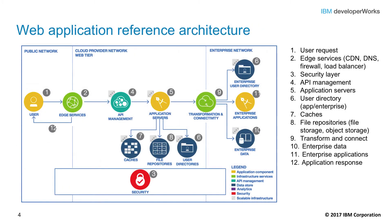This diagram illustrates the architecture components of a web application. Not every web application requires all of these components, but some components and functions are present in every web application. It all starts with a user, which could be a user agent or application acting on behalf of the user. The user or user agent sends a request to a specified URL.